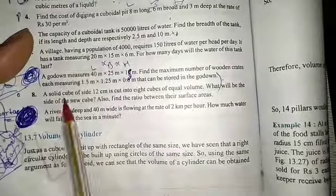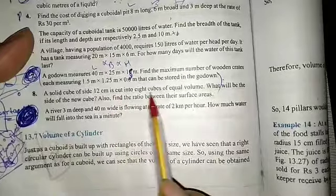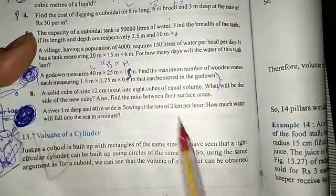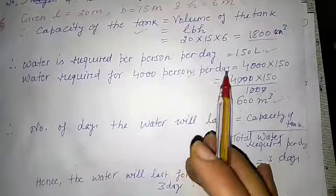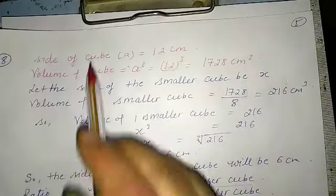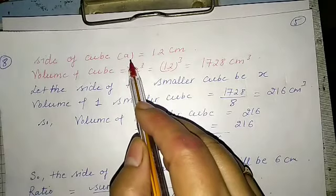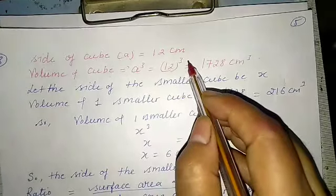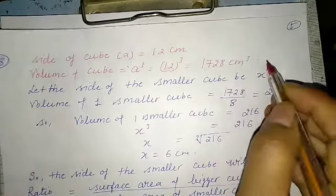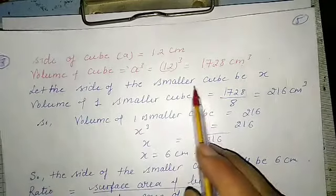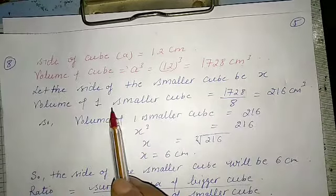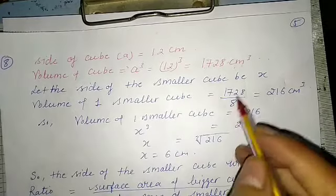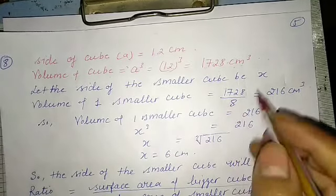A solid cube of side 12 cm is cut into eight cubes of equal volume. What will be the side of the new cube? Let side of the bigger cube a = 12 cm. Volume of bigger cube = 12³ = 1728 cm³. Let the side of the smaller cube be x. Since there are 8 smaller cubes, volume of one smaller cube = 1728 ÷ 8 = 216 cm³.